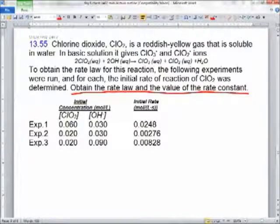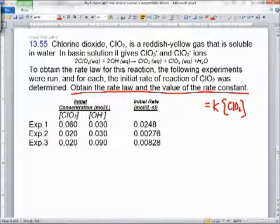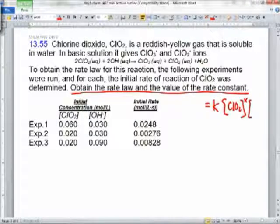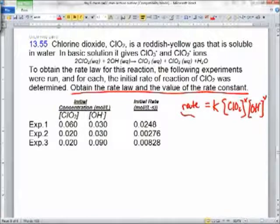Amanda, let's start out by just writing our general rate law. Otherwise, we don't have a little guide for anything. So how would we, in general, write our rate law for this? You'd write rate equals k times ClO2 raised to the X, and the other reactant hydroxide raised to the Y. So this is what we're generally supposed to follow.